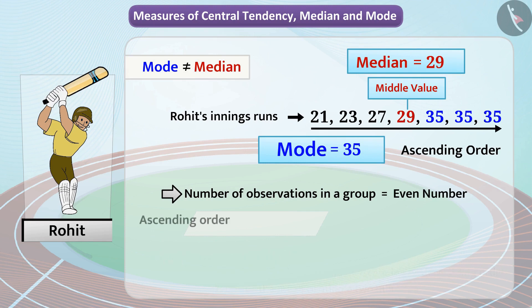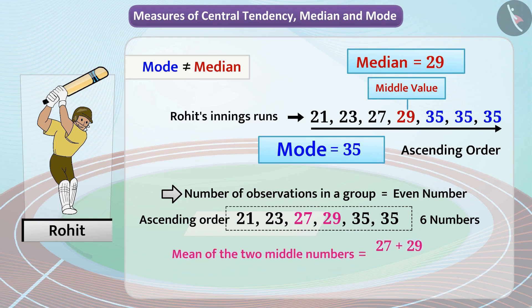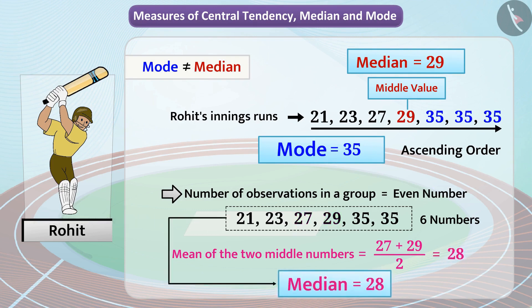For example, for the set of observations 21, 23, 27, 29, 35, 35, the numbers 27 and 29 are the two middle numbers. To find the median, we derive the mean of these two middle numbers: 27 plus 29 divided by 2 equals 28. The median of these observations is 28. Even though 28 is not part of the data provided, it divides the group of data into two equal parts.